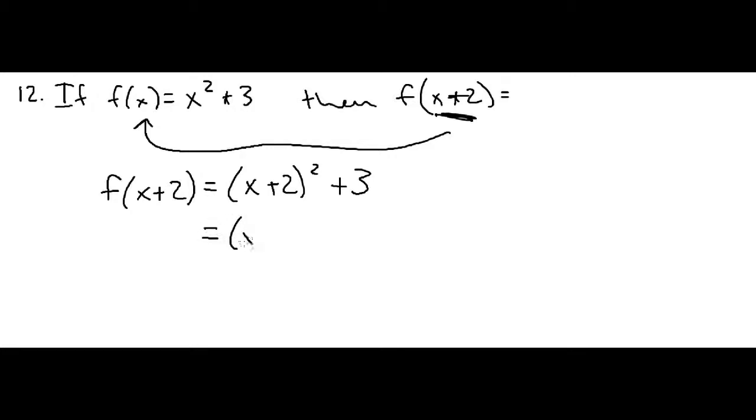So now all you have to do is I have to simplify this right-hand side. So I'm going to get (x+2) times (x+2) plus 3.